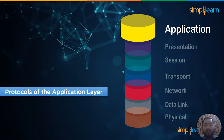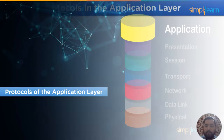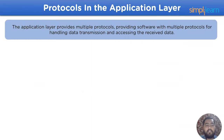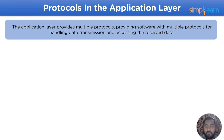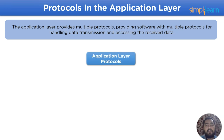Let's move forward with the next heading: protocols of the application layer. The application layer provides multiple protocols for software to handle data transmission and accessing received data over a remote access channel in the network model. Some of the application layer protocols applied in a network model are as follows.